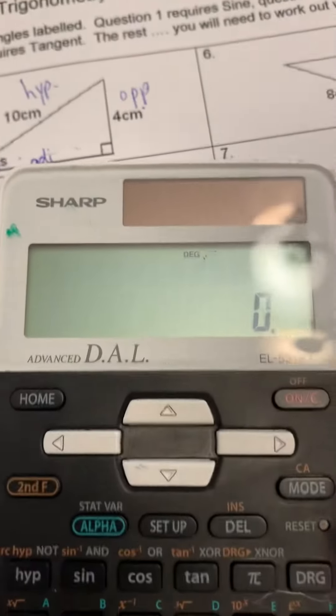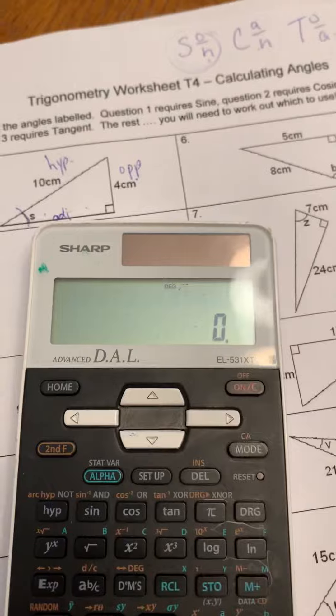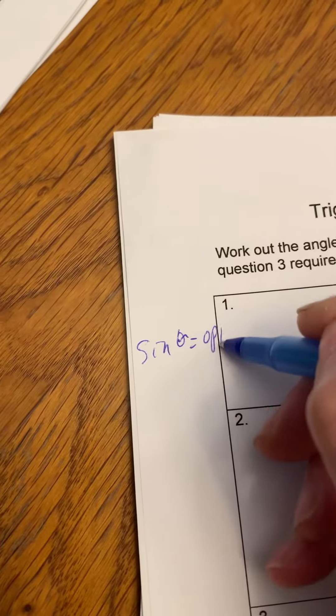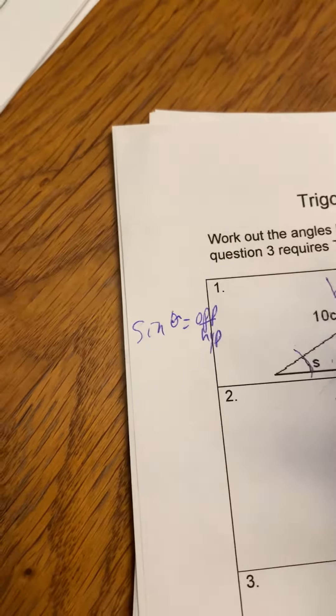So you hit the reset button, make sure that that happens. Okay, so the sine of an unknown angle is equal to opposite over hypotenuse, and I'm sorry that I don't have a better work area here. I should have grabbed a piece of paper.